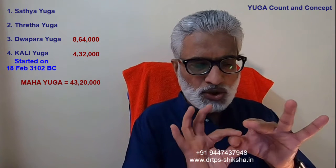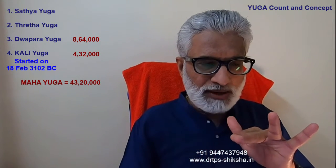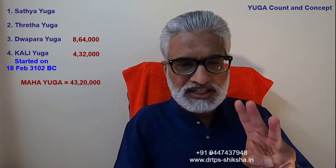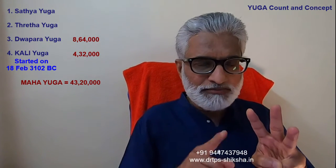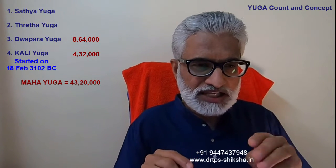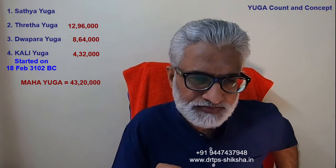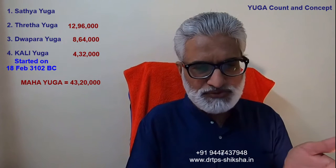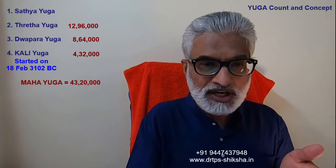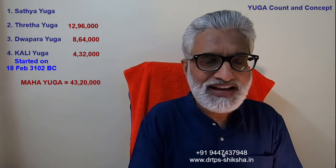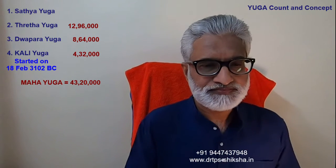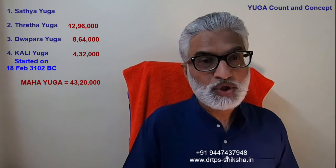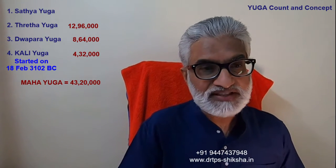So: Kali Yuga is 4,32,000; Dvapara Yuga is 8,64,000, which is 2 times Kali Yuga. Then 3 times Kali Yuga is Treta Yuga — 3 multiplied by 4,32,000 equals 12,96,000 years. Now Kali Yuga is 5,000 years in; another 8,64,000 years was Dvapara Yuga. So Rama lived here nearly 8,70,000 years back, during the Treta Yuga, which spanned 12,96,000 years.